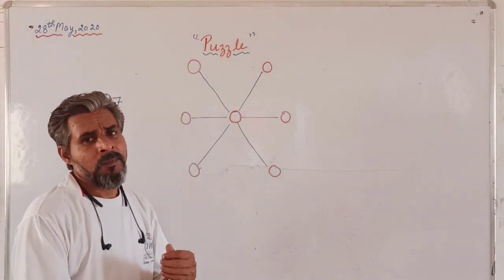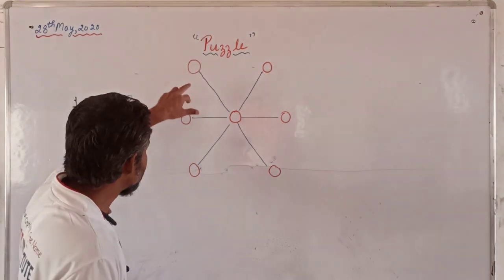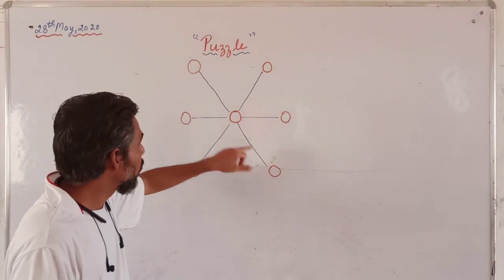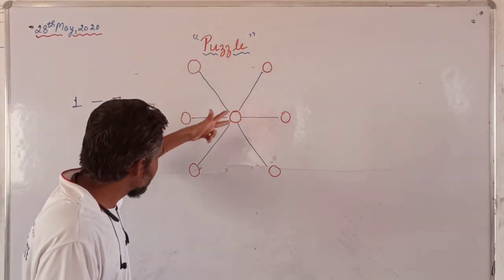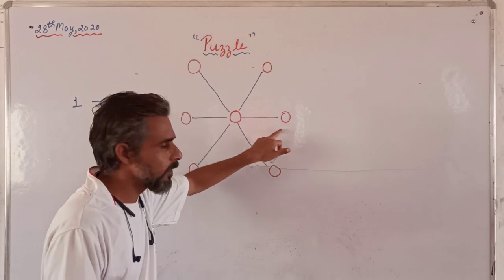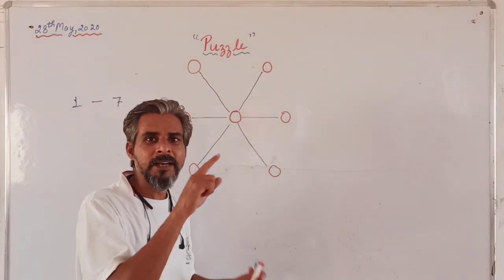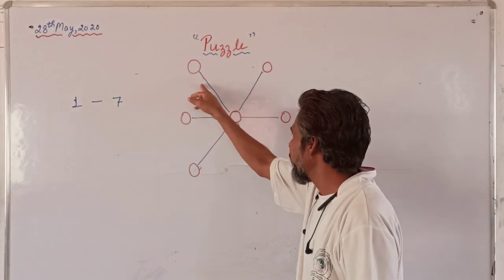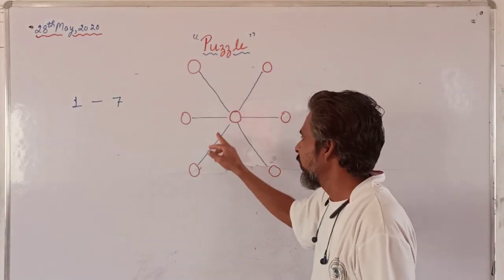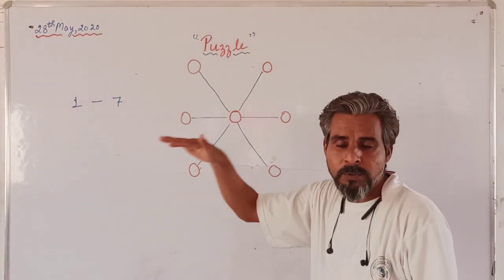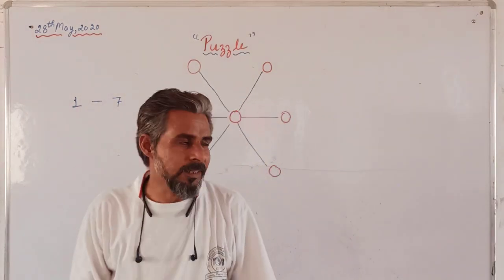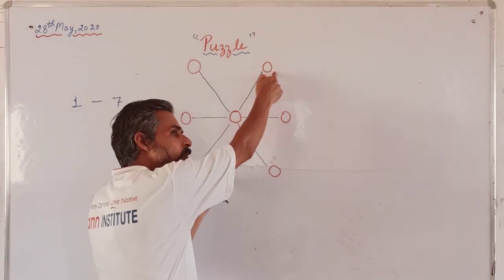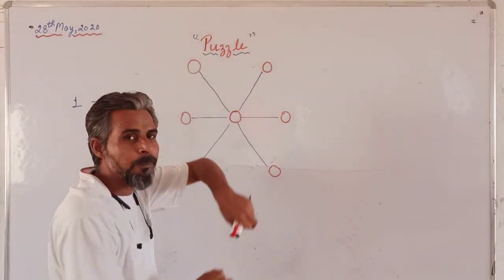The numbers lying on the same line - this line, this one has like 1, 2, 3 - three numbers. The sum of numbers on each line should be equal to 12.